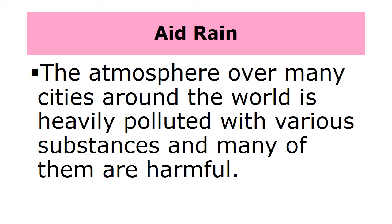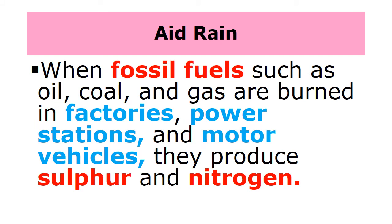Acid rain: the atmosphere over many cities around the world is heavily polluted with various substances, and many of them are harmful. When fossil fuels such as oil, coal, and gas are burned in factories, power stations, and motor vehicles, they produce sulfur and nitrogen.